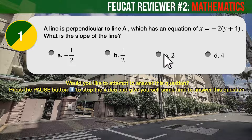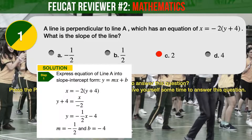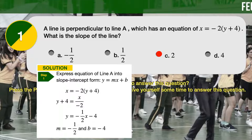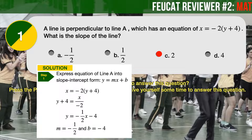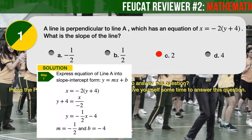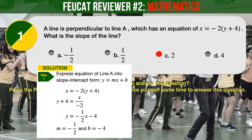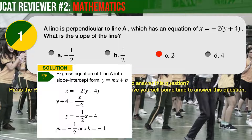The correct answer is C, 2. Step 1: Let's express the equation for line A in the standard slope-intercept form, Y equals MX plus B, where M is the slope of the line and B is its Y-intercept. We should end up with Y equals minus 1 half X minus 4. From here we can extract the slope M of line A, which is minus 1 half.